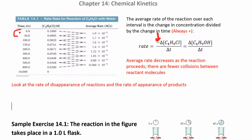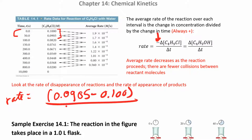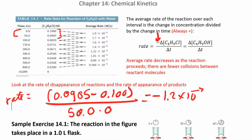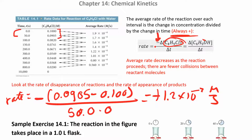Let me show you this calculation. Looking between 0 and 50 seconds: the rate equals negative times (final minus initial concentration), so that's negative times (0.0905 minus 0.1), divided by (50 minus 0) seconds. You get a negative 1.2 × 10⁻² M/s from the subtraction. Since rates are always positive, we put a negative sign in front, which makes it positive. You only need that negative sign for reactants, because final minus initial is always negative for a reactant.